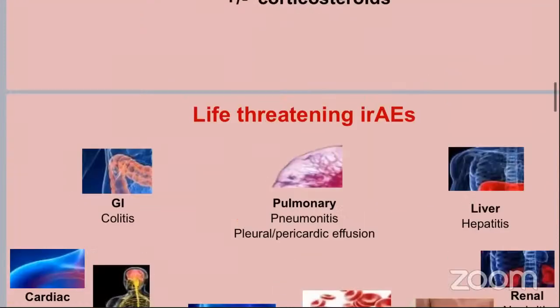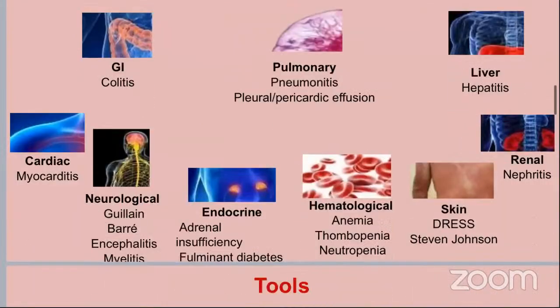Other organs that can be affected include: cardiac — myocarditis; neurological — Guillain-Barré syndrome, encephalitis, myelitis; endocrine — adrenal insufficiency and hypophysitis; pulmonary; hematological — anemia, neutropenia, thrombocytopenia; skin — DRESS and Stevens-Johnson syndrome; and renal — nephritis.